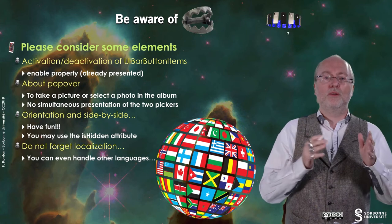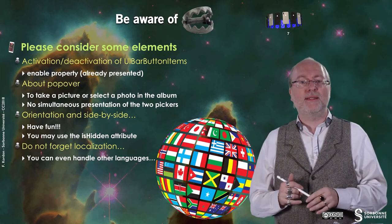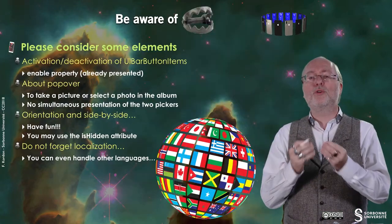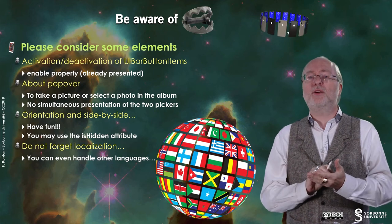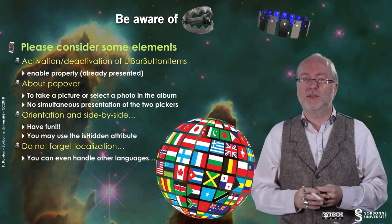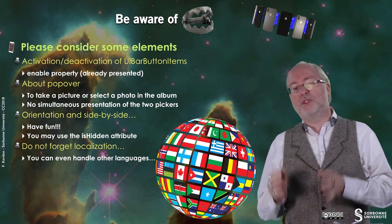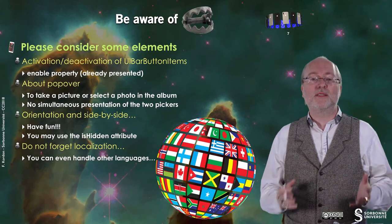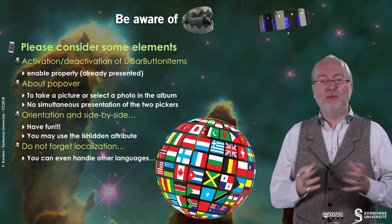Be aware of a few traps. First, you have activation and deactivation of your bar button items. There is a property called enable — if it's set to true, then the button is enabled and you can tap on it, and it appears stronger in terms of color; otherwise it's lighter and you cannot press on it. About the popover: to take a picture or select a photo from the album, you need a popover when you are on a large device. You cannot present simultaneously two pickers — but you don't have to deal with that.